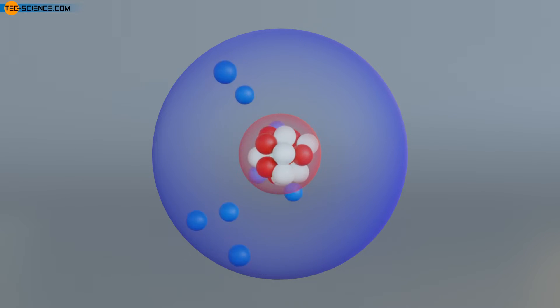Characteristic for a particular type of atom, or for a chemical element, is the number of protons in the nucleus. The number of protons essentially determines the chemical behavior of the element and is responsible for the order in the periodic table.